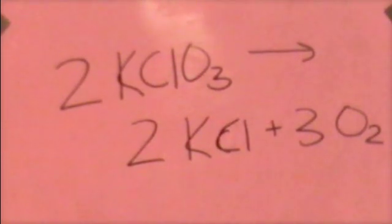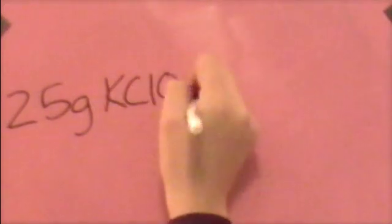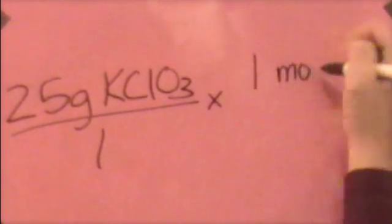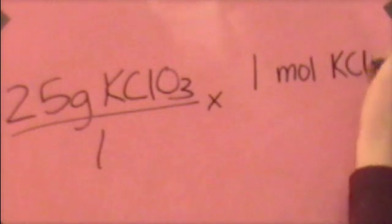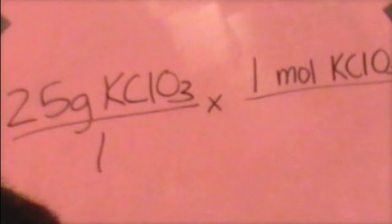Well, we always start with what we're given. So, since we were given that there are 25 grams of potassium chlorate, we will start with that over 1. And we're going to multiply that times to get it into moles. So, we're going to multiply it by 1 mole of KClO3 over the molar mass of KClO3.